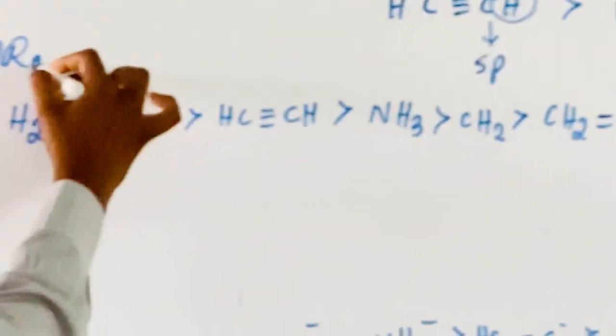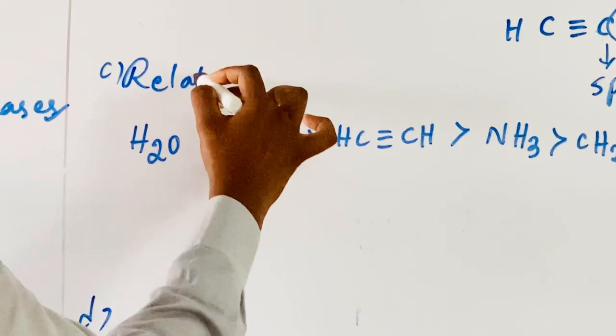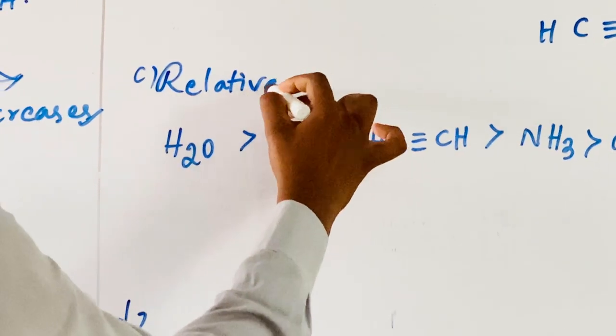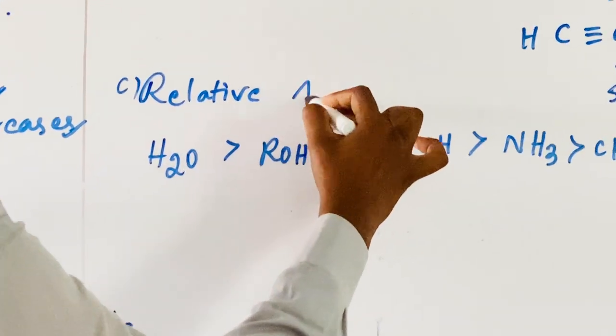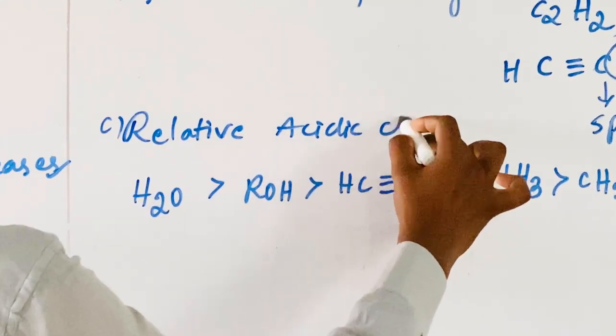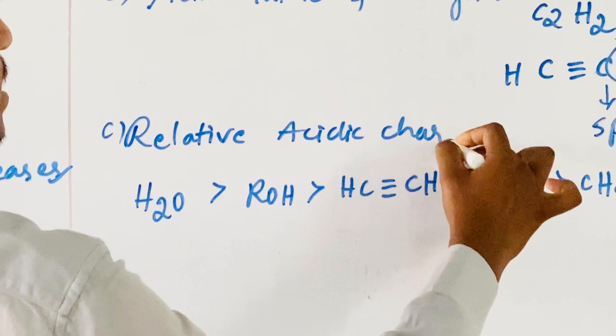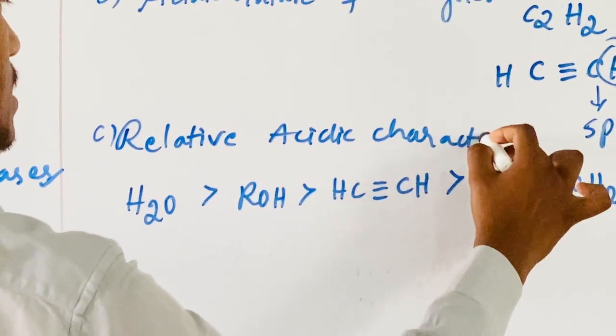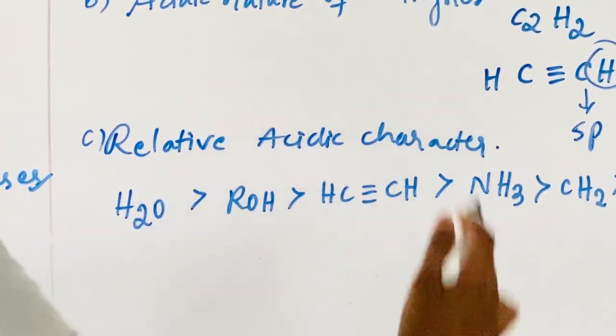Note 3: Relative acidic character of the following compounds — we are comparing water molecule, alcohol, ethylene, ammonia, ethyl, and methane.